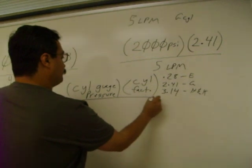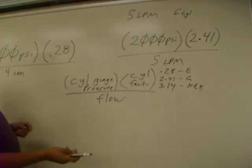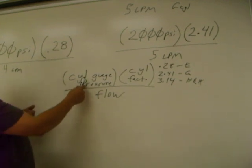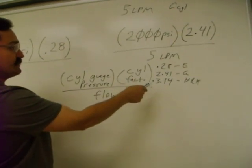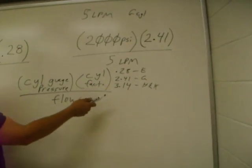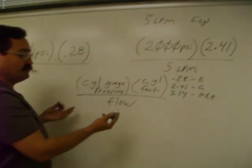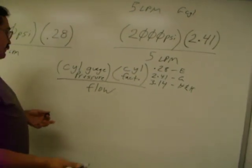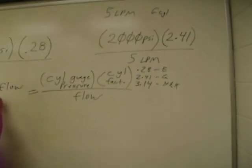The formula is cylinder pressure gauge reading, the cylinder factor, which each cylinder for different gases has a different factor. These factors are for oxygen and air. Then you divide it by your flow, which the doctor would prescribe as 2 to 10, or however many liters per minute. That's going to give you your flow duration.